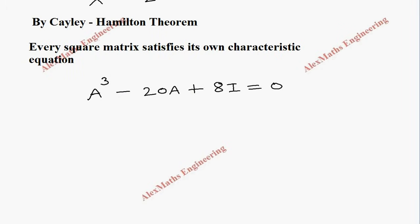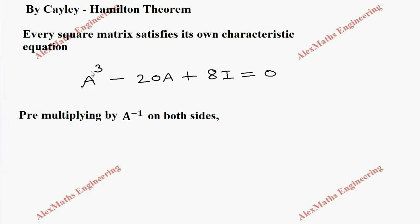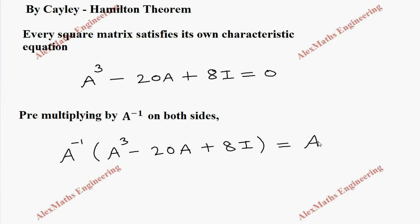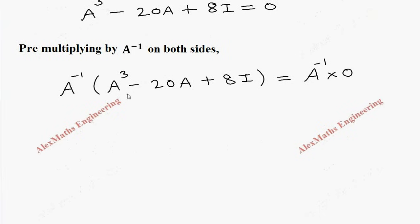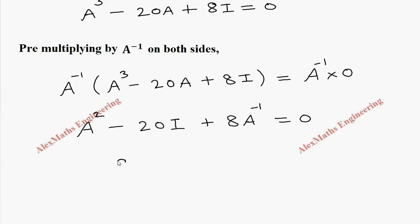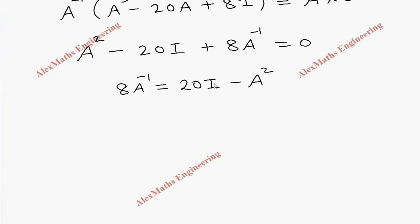Second part: we have to find the inverse. For finding the inverse, we are going to pre-multiply by A inverse on both sides. So A inverse into A cubed minus 20A plus 8I equals A inverse into 0. Multiplying A inverse inside: the first term becomes A squared, then minus 20 times A inverse A is identity, then plus 8A inverse, equal to 0. Keeping 8A inverse on one side: 8A inverse equals 20I minus A squared.